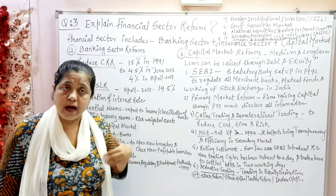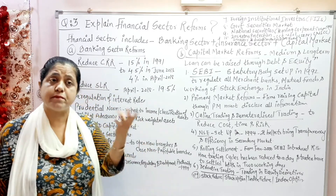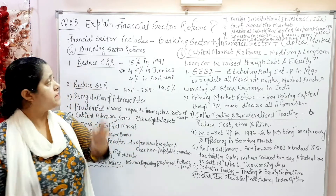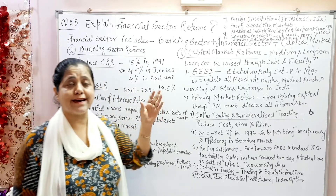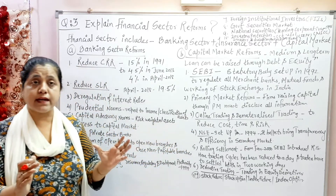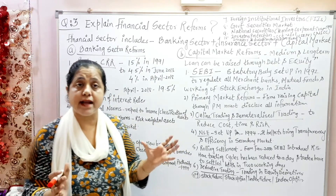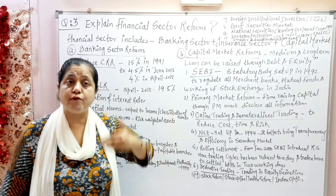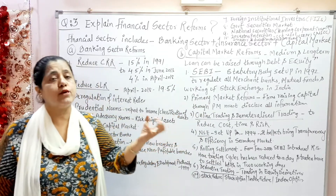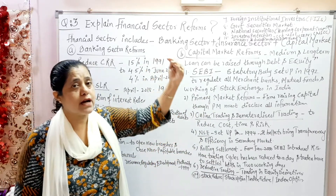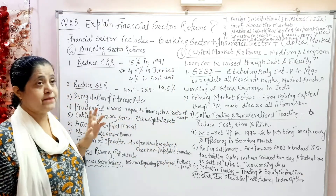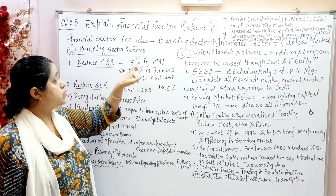Now we will discuss banking sector reforms through the new economic policy of 1991. The first step taken was to reduce the Cash Reserve Ratio (CRR). When CRR is reduced, banking sectors have enough money to increase the volume of money in circulation through credit creation, thereby increasing credit facilities.